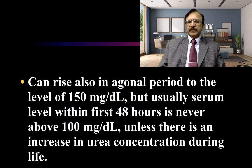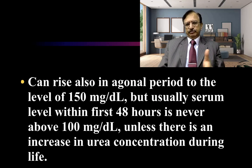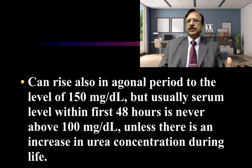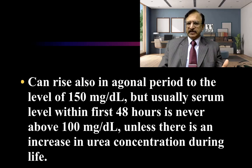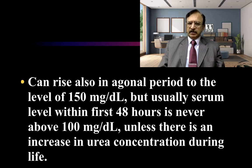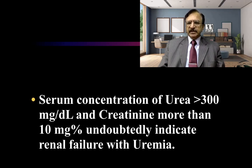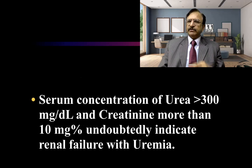The blood urea concentration can rise in the agonal period up to 150 mg per deciliter. But usually serum levels within the first 48 hours are never above 100 mg per deciliter unless there is an increase in urea concentration during life — meaning due to some kidney disease. Serum concentration of blood urea more than 300 mg per deciliter and creatinine more than 10 mg percent undoubtedly indicate renal failure due to uremia.